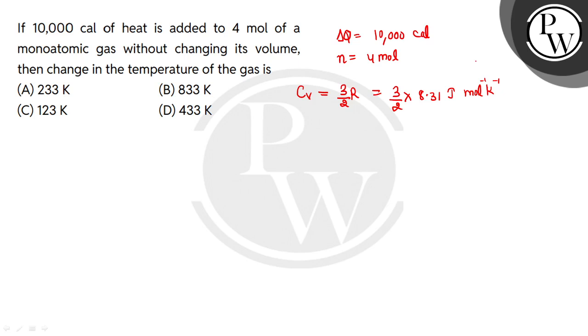Now let's see how I can convert this to calories. We have added heat in calories, so we can convert this: 3 by 2. We know that 1 calorie equals 4.18 J. So this will be 3 by 2 into 8.31 divided by 4.18, which gives calories per mol per kelvin.